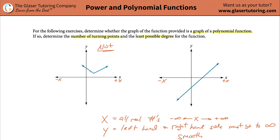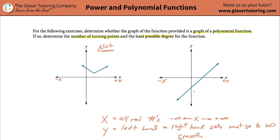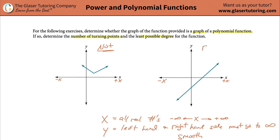How about this one? That looks pretty smooth — there's no jerk points, no jerkiness, no sharp points, nothing. Nice and smooth. And therefore, this is a polynomial function.